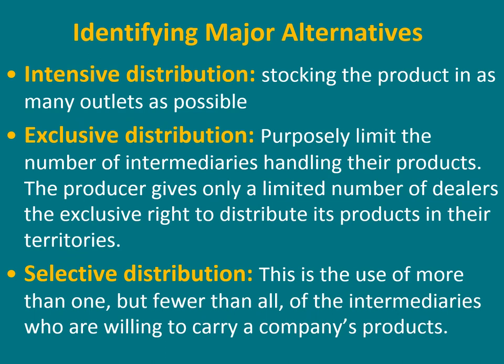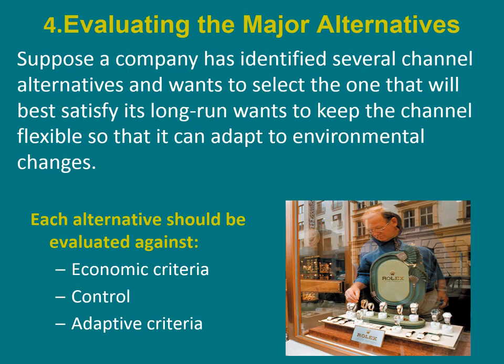Intensive distribution means stocking the product in as many outlets as possible. Exclusive distribution limits the number of intermediaries handling the products. Selective distribution is the use of more than one but fewer than all of the intermediaries who are willing to carry the company's products. Finally, we should evaluate the major alternatives based on economic, control, and adaptive criteria. This is how you design a distribution channel.